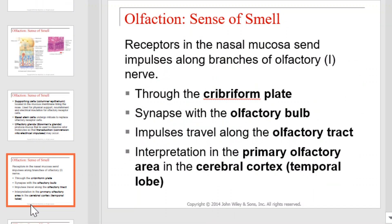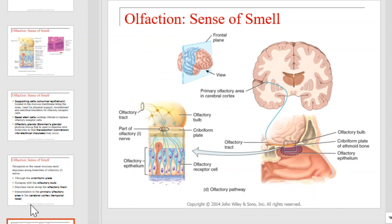Receptors in the nasal mucosa send impulses along branches of the olfactory nerve. Those impulses travel through the cribriform plate, synapse with the olfactory bulb, and then travel along the olfactory tract. Interpretation of the impulse occurs in the primary olfactory area in the cerebral cortex. This illustration will provide you with an understanding of the pathway that impulses travel from the nose to the point at which they are interpreted in the brain.